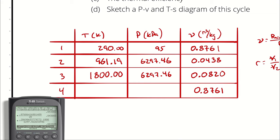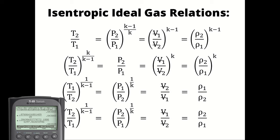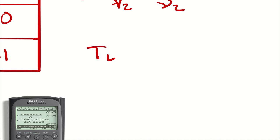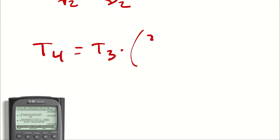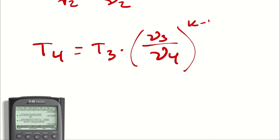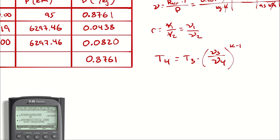To find state 4, we use the isentropic ideal gas equations again. T4 = T3 × (V3/V4)^(k−1). Importantly, V3/V4 is neither r nor 1/r — because V2 ≠ V3, the ratio is not simply the compression ratio. We use the actual specific volumes we calculated: V3 = 0.0820 m³/kg and V4 = V1 = 0.8761 m³/kg.